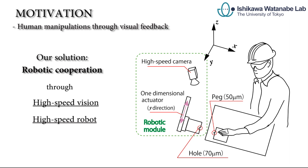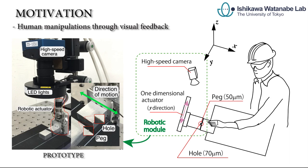The robotic module drives the workpiece with the hole on it. It aligns the hole with the peg, which is held by the human, by adapting its position with micron order accuracy.